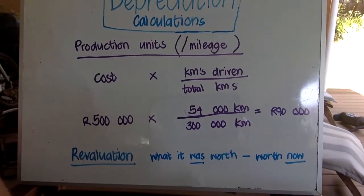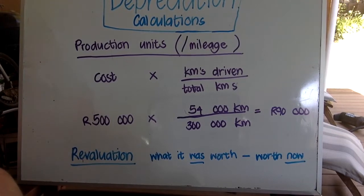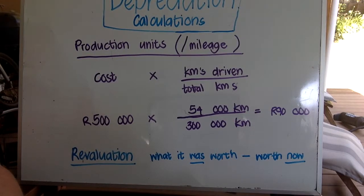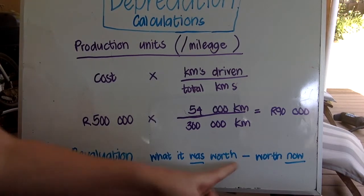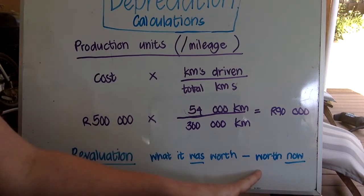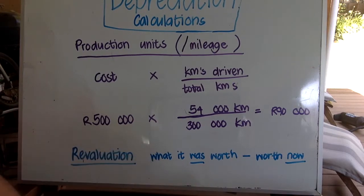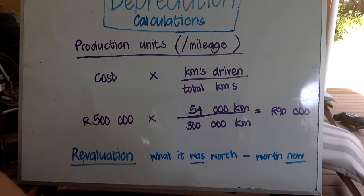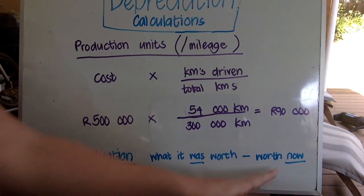The last method is a very simple one — the revaluation method. You would use this where you have a number of different tools, many items each with a relatively small individual value, but in total they have quite a high value so you need to show them as an asset and depreciate them over time. However depreciating each and every item individually would be far too time consuming. Instead you ask: what was it worth at the beginning of the financial year? What is it worth now? The difference is what you write off as depreciation. This is quite realistic, and remember that IFRS — International Financial Reporting Standards — says your accounting records must be fairly presented to show the actual financial situation, which is exactly what you are doing.